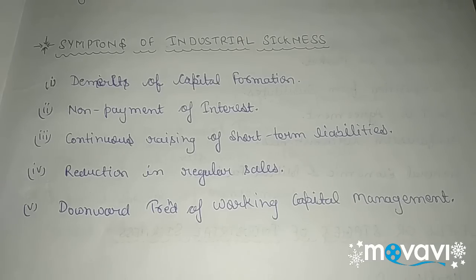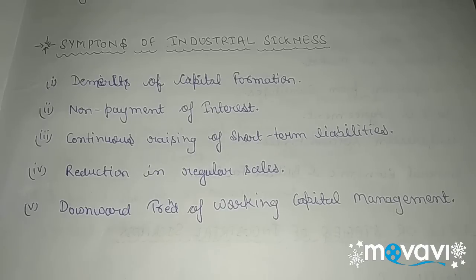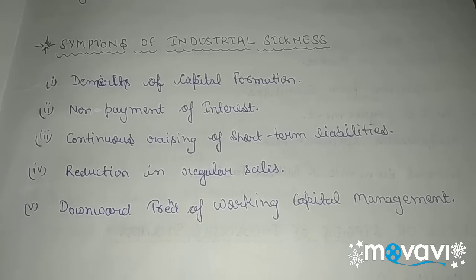After the introduction part, the second topic is symptoms of industrial sickness. Under this topic, some symptoms and indicators are described which help us identify whether an industry falls in the sick units category or not. The first is demerits of capital formation — if any industrial unit is not able to form capital, it means it cannot meet its requirements and cannot grow. Looking at this situation, we can say that it may fall in the sick industrial unit category.